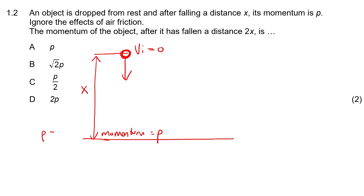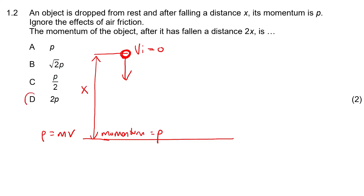We know that momentum is equal to mass times velocity — just in case we need that. Now it says: what would the momentum of the object be if it falls a distance of 2x? A lot of learners are just going to say option D, but that's not correct. We need to understand that momentum equals mass times velocity, so we need to look at the velocity.